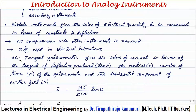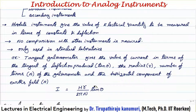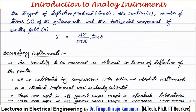Let us take the tangent galvanometer as an example. The tangent galvanometer gives the value of current in terms of the tangent of the deflection produced — that means in the form of tan theta, where theta is the deflection. The current is I = H·r / (2πn) · tan θ, where r is the radius, n is the number of turns, and H is the horizontal component of Earth's field. H, r, and n are constants, so the reading is in terms of tan theta, and from that we calculate the current by substituting into the formula.